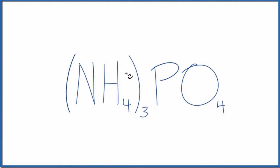So if you want to know the number of ions in ammonium phosphate, here's how you do it. We have (NH4)3PO4.